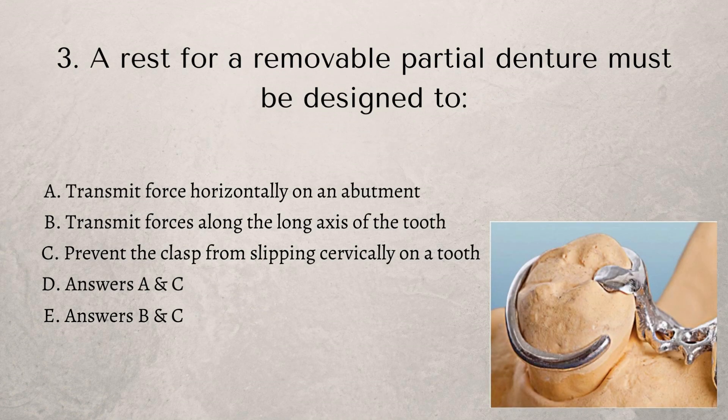Moving on to number three. A rest for a removable partial denture must be designed to: A) transmit forces horizontally on an abutment, B) transmit forces along the long axis of the tooth, C) prevent the clasp from slipping cervically on a tooth, D) a combination of A and C, or E) a combination of B and C. We definitely don't want to transmit forces horizontally, so that takes answers A and D out straight away. Rests do transmit forces along the long axis of the tooth, but they also prevent the clasp from slipping cervically. So the best answer is option E — answers B and C.